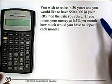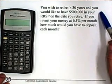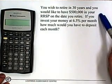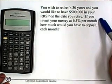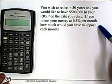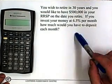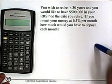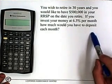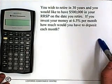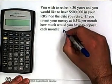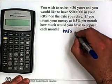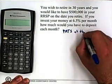Here's the question: You wish to retire in 30 years and you would like to have $500,000 in your RRSP on the date you retire. If you invest your money at 6.5% per month, how much would you have to deposit each month? There's no mention of making the payments at the beginning or the end of the month. When that happens, just assume that the payments are at the end of the month.